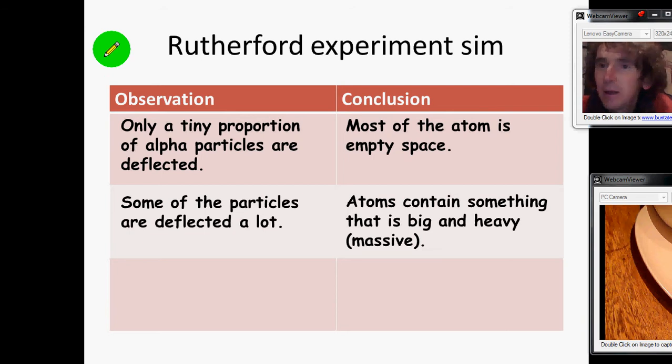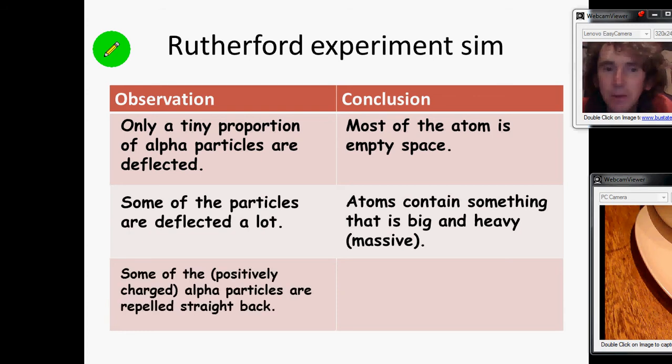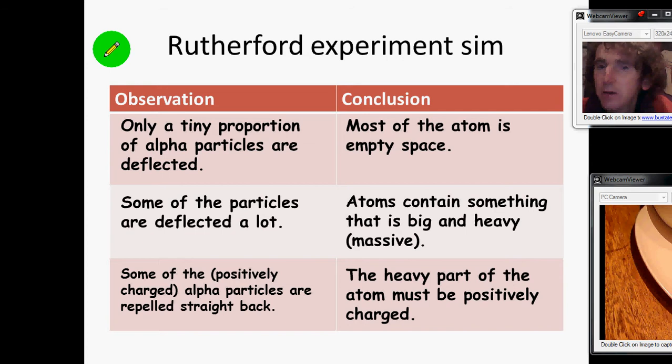So clearly, inside all this empty space, there must be something that was big and heavy, that's got a lot of mass. He also said that because some of the particles came straight back, it looked like they were being repelled. Now he already knew that the alpha particles were positive. So he concluded that this heavy part of the atom must also be positively charged. And that's the evidence that we have for our model of the atom.